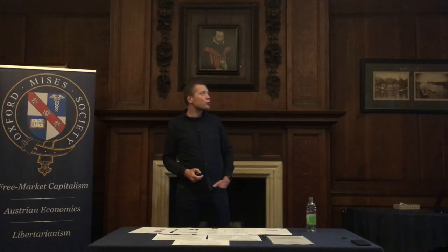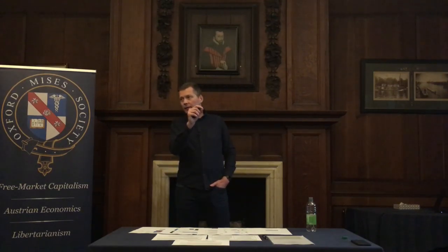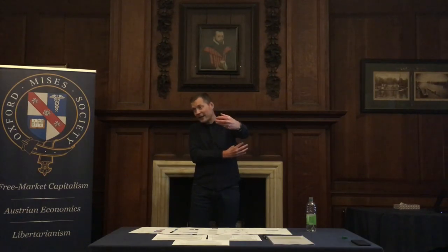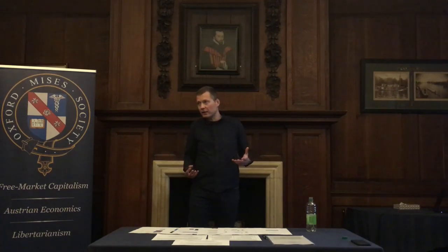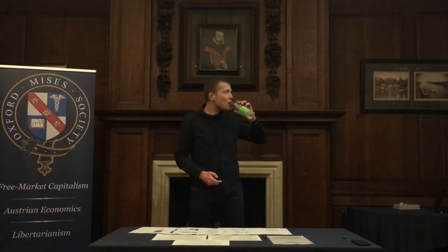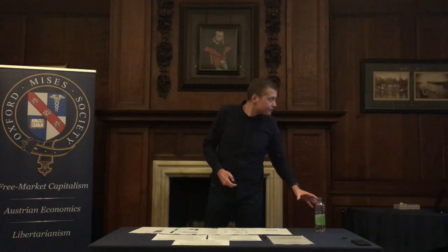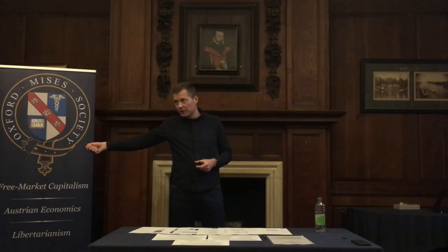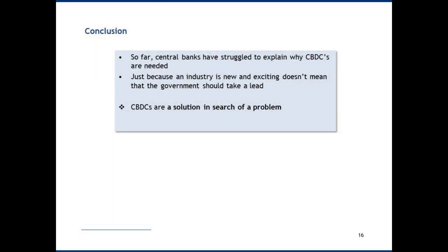In cryptopia, the CBDC is not a retail CBDC — the retail arm is provided by private companies. The CBDC operates at a wholesale level, sitting behind the system as a reserve asset, while private companies issue the actual retail digital currencies that customers use. Many people think Bitcoin could play the role of digital gold in such a system, providing a base outside government control.